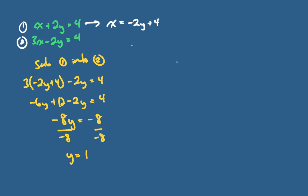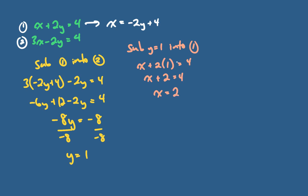Collecting my terms: 4 minus 12 is negative 8. So the solution contains y equals 1. I continue on and sub y equals 1 into equation 1 — that one looks easier: x plus 2 times 1 equals 4, so x plus 2 equals 4, and x equals 2. Therefore the solution is the coordinate (2, 1).